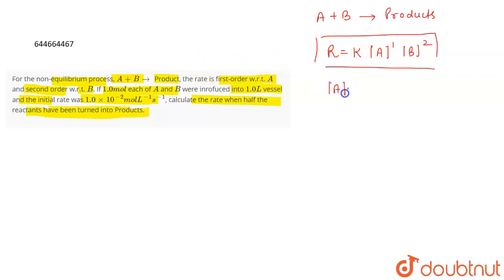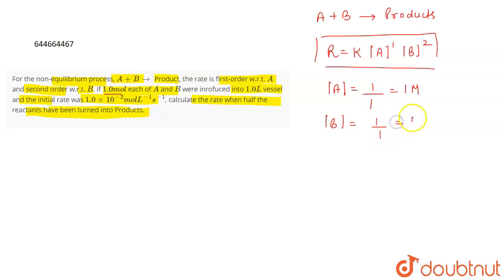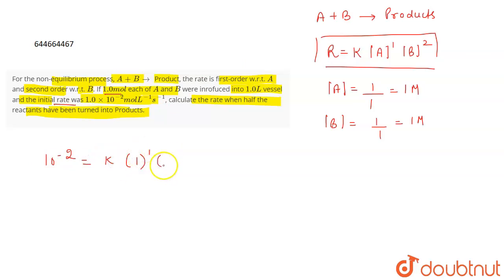If we have to find out the concentration of A, that will be the number of moles of A, which is 1 mole, divided by the volume, which is 1. So the concentration is 1 molar. Similarly, the concentration of B will be 1 by 1, which is 1 molar. You are given the initial rate of the reaction. So, initial rate is 10 to the power minus 2, equal to the rate constant k, concentration of A to the power 1, concentration of B to the power 2. From here, we are going to find out the value of the rate constant.